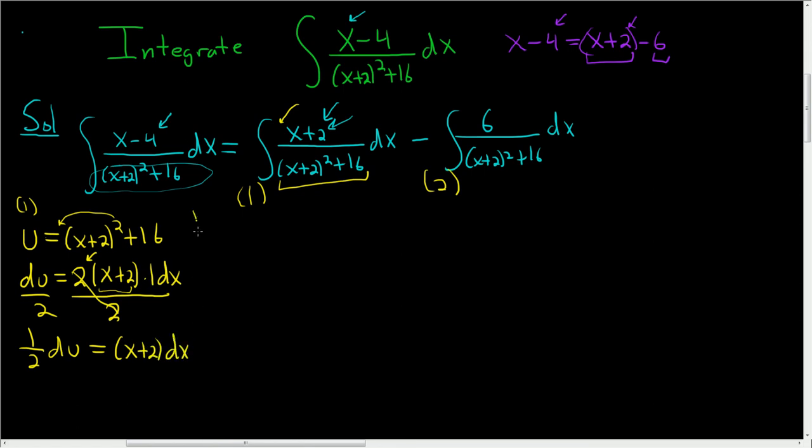So now we can rewrite the first integral as follows. So (x+2)dx, that's here, and we said that's (1/2)du. So we can pull the 1/2 out, much cleaner to pull it out. And this is simply du, and the denominator is u. So this is very easy to integrate. This is going to be the natural log of the absolute value of u, piece of cake.